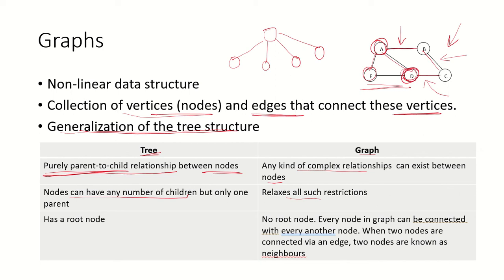A tree has a root node. There is no root node in the graph. Every node in the graph can be connected with any other node. When two nodes are connected via an edge, these nodes are known as neighbors. B and C are connected via an edge, so B and C are neighbors. A and B are connected via an edge, so A and B are neighbors. But B and D are not exact neighbors.